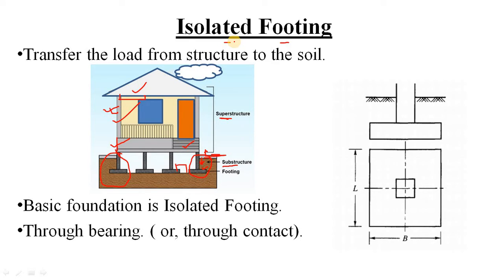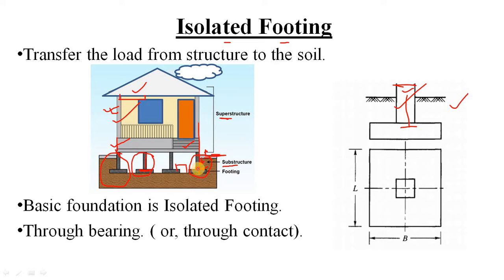From the picture, isolated footing looks like an inverted T-shape. You might think the whole inverted T is the footing, but that is wrong. The stem of the inverted T is nothing but your column, which goes up to that point. The footing is only the wider base part — it takes the load from the column.